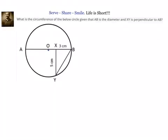Hello friends, welcome back, hearty welcome to you. Let us try to solve this interesting example. What is the circumference of the below circle, given that AB is the diameter and XY is perpendicular to AB? So we have a circle. We have been given that AB is the diameter and XY is perpendicular to AB. We have to find out the circumference of the below circle.